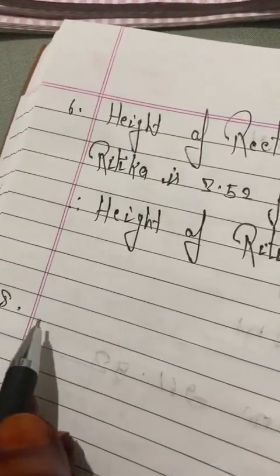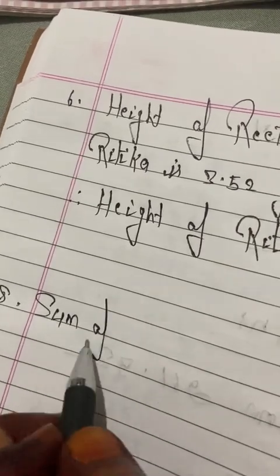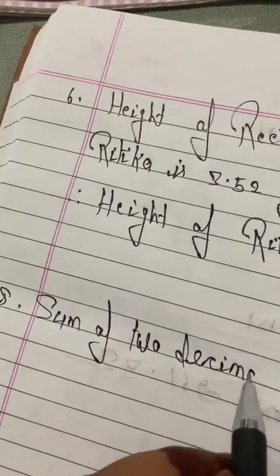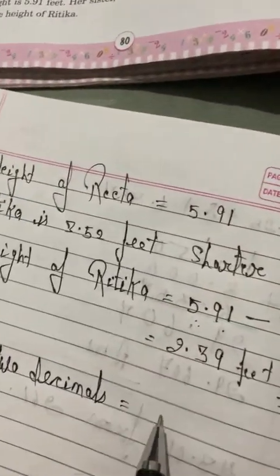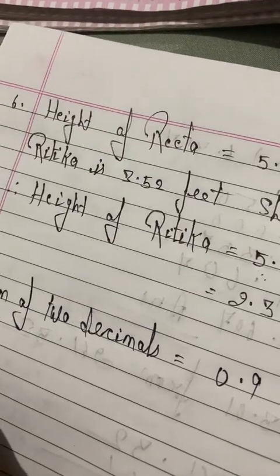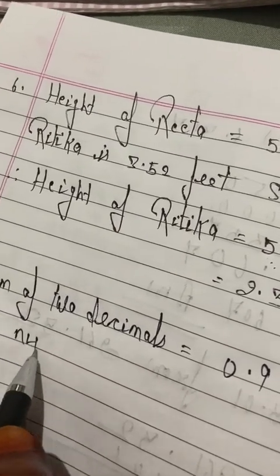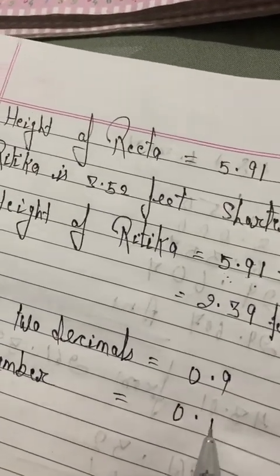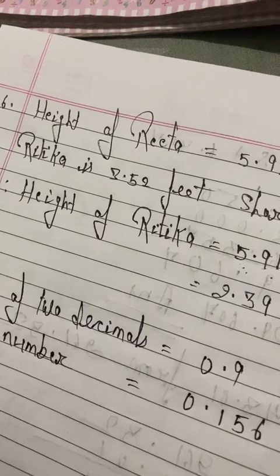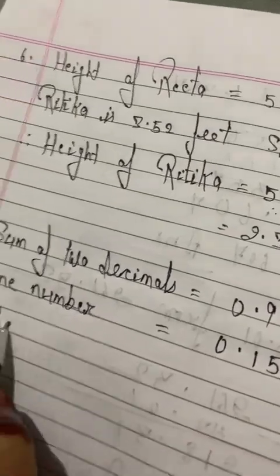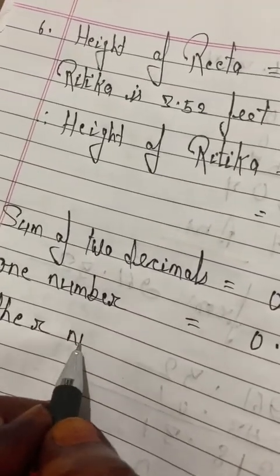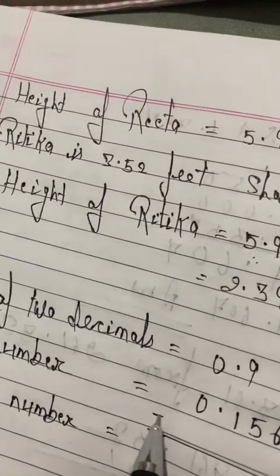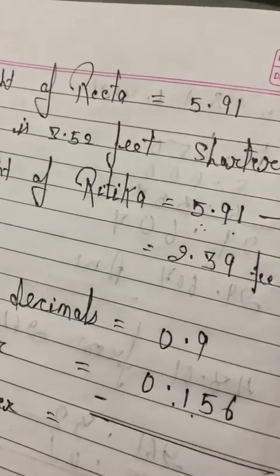The sum of 2 decimals is 0.9, and one number is 0.156. We have to find the other number. To solve it, we have to subtract 0.156 from 0.9. We have to put two zeros here to align the decimal places.